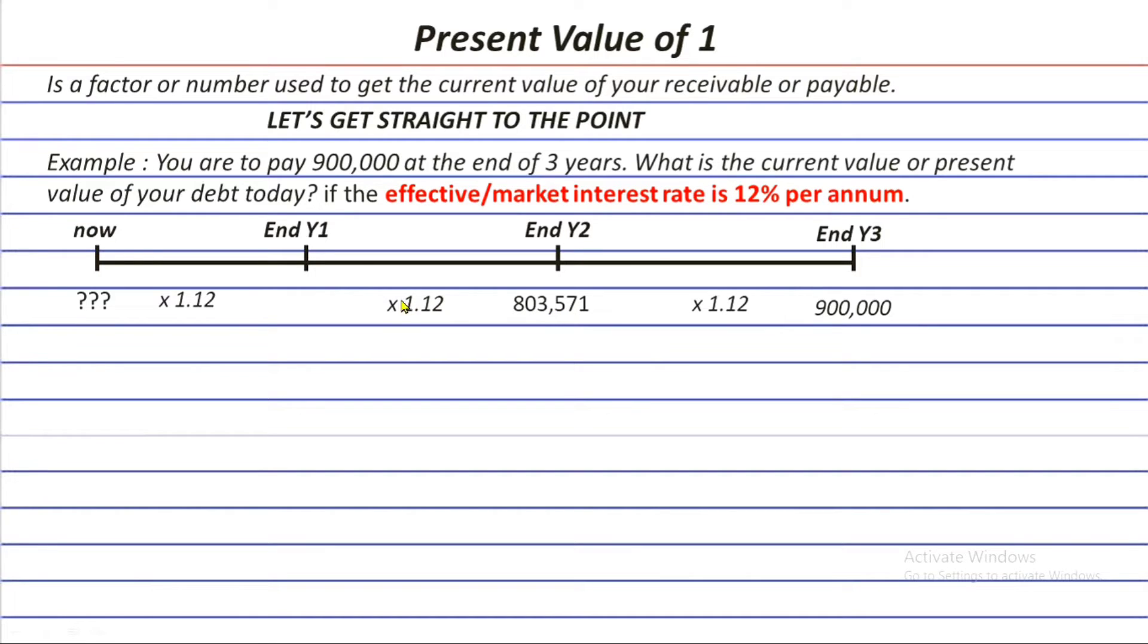And divide it again by 1.12 until we get here because this is our goal. We have 717,474. And divide again by 1.12 for the last time. And we will get this amount, 640,602. And that's it. That's your debt today, which is after 3 years, it will become 900,000.